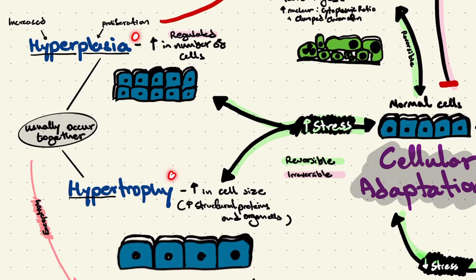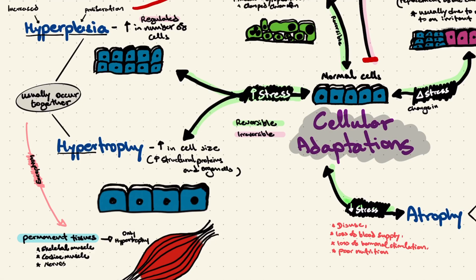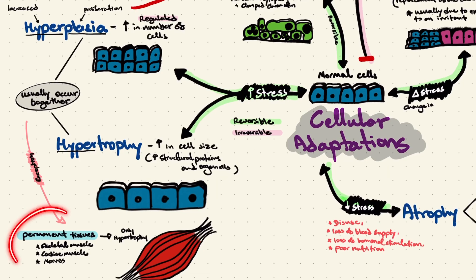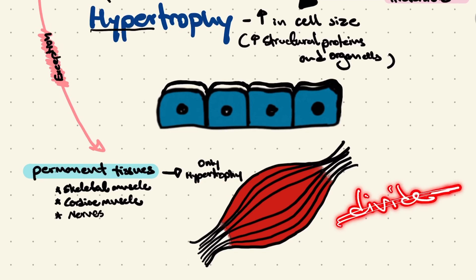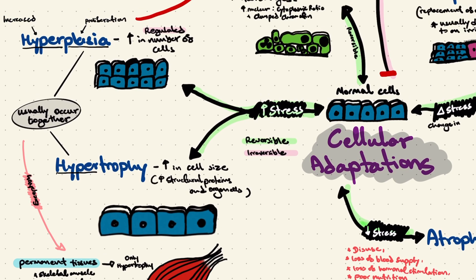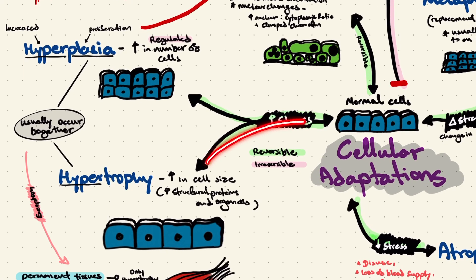Hyperplasia and hypertrophy normally occur together since they're both a response to increased stress. However, there is an exception: permanent tissues such as skeletal muscle, cardiac muscle, and nerves can only undergo hypertrophy because they are not able to divide. It's important to note that hyperplasia and hypertrophy are easily reversible — if you remove the stress, the cells will return to normal.